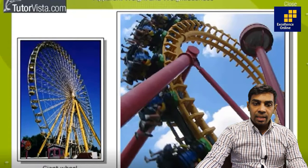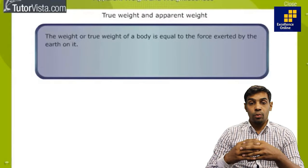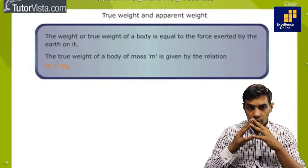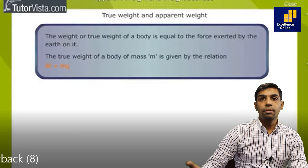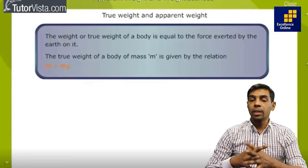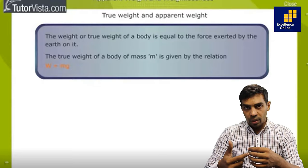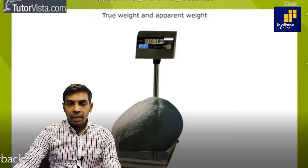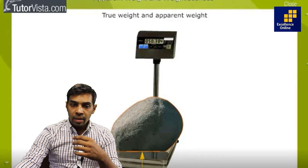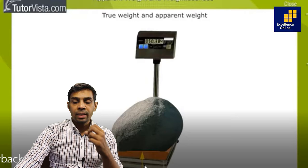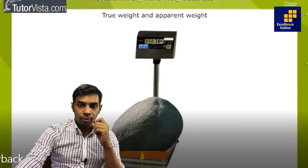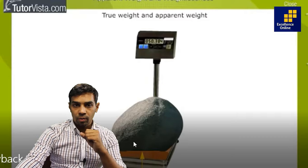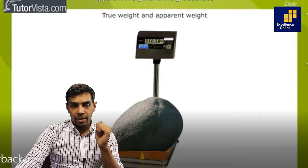Today we will see how the apparent weight of an object changes. You should know what is meant by true weight and apparent weight. The true weight of a body equals the force exerted by Earth on it. The value of weight is mg — the gravitational pull towards the center of the Earth, calculated as W = mg. The apparent weight changes depending on conditions and circumstances, unlike the actual weight.